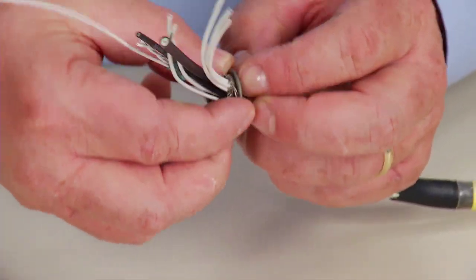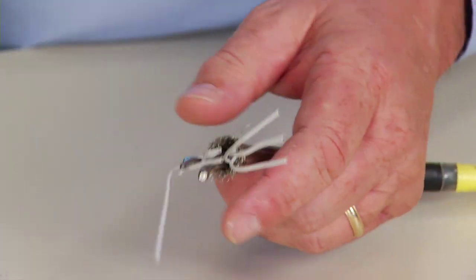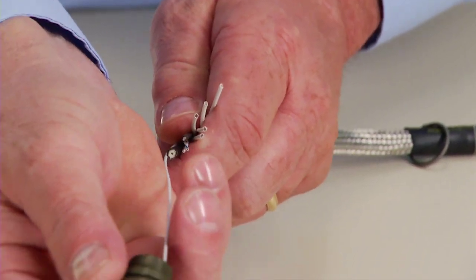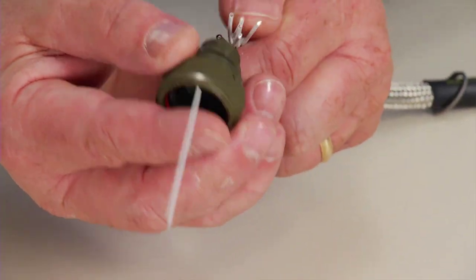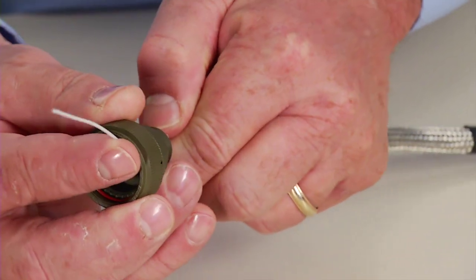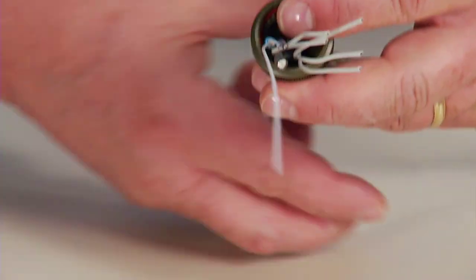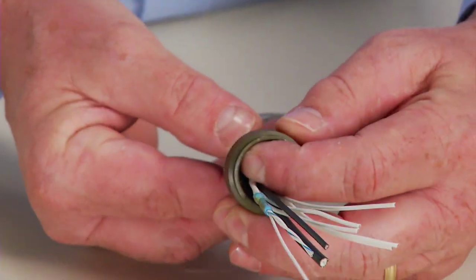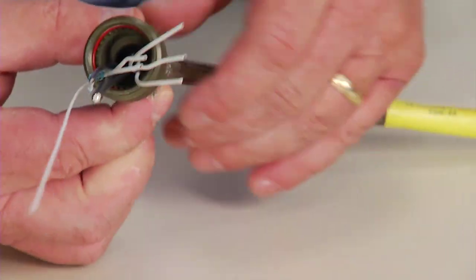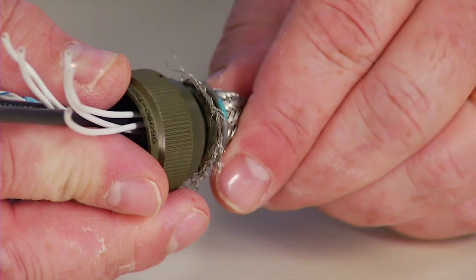Flare the end of the exposed braid and position the Tynel lock adapter so that the flared braid covers the braid and Tynel lock ring landing on the adapter. Next, slide the Tynel lock ring over the braid and Tynel lock adapter landing, pushing the ring forward as far as it will go.